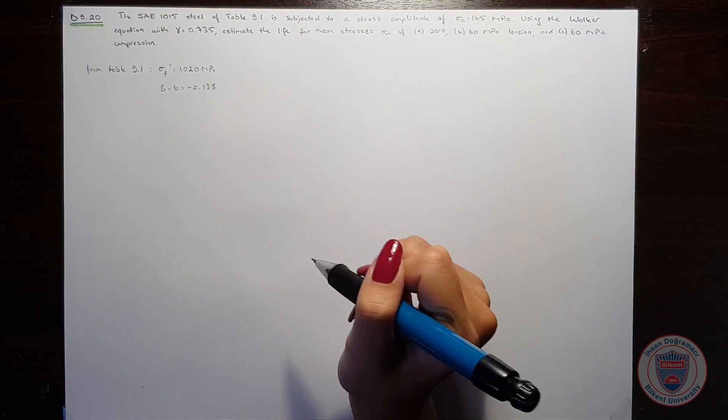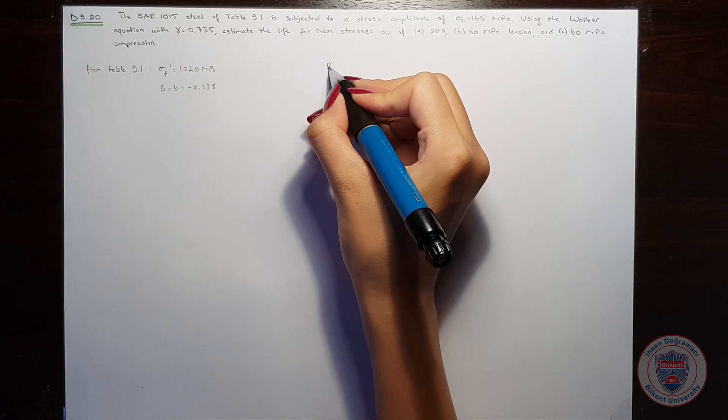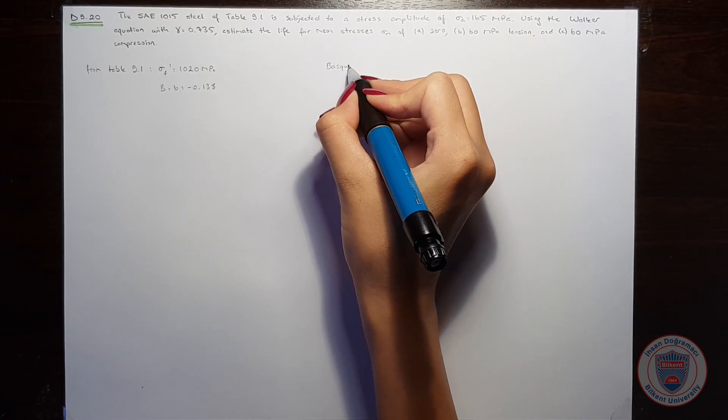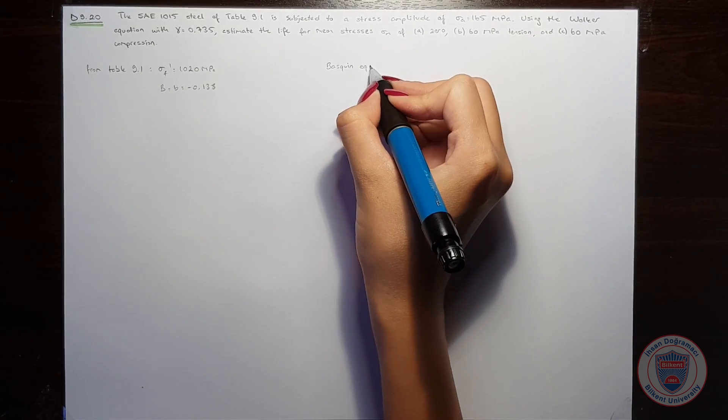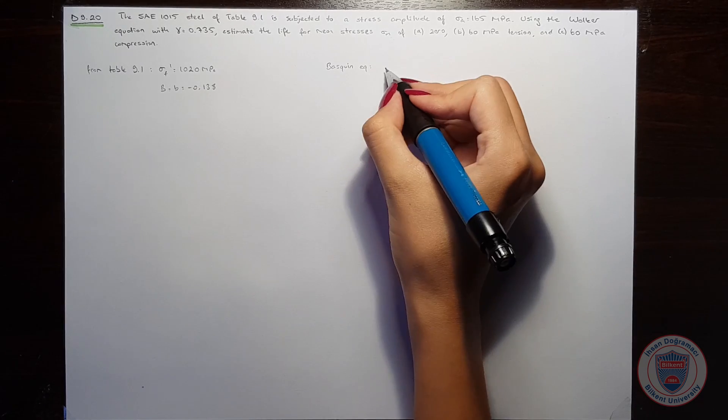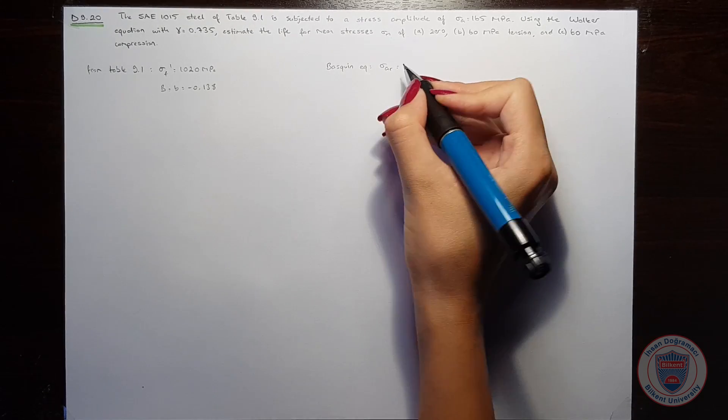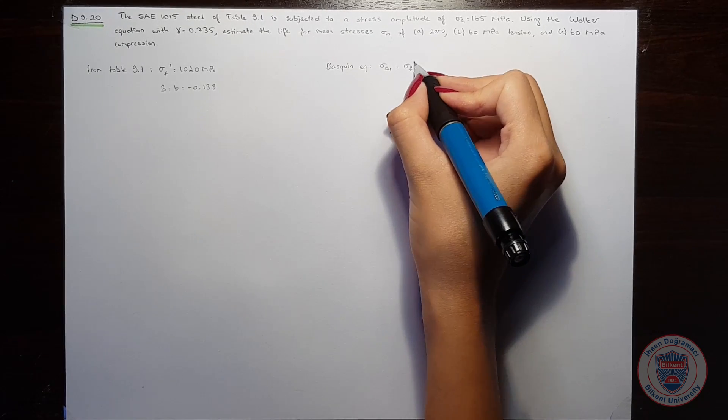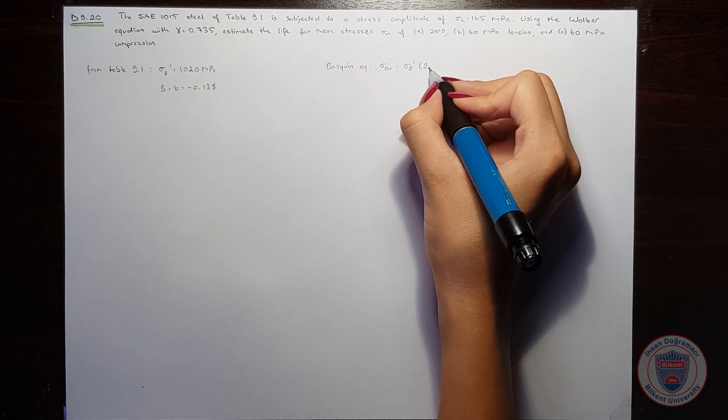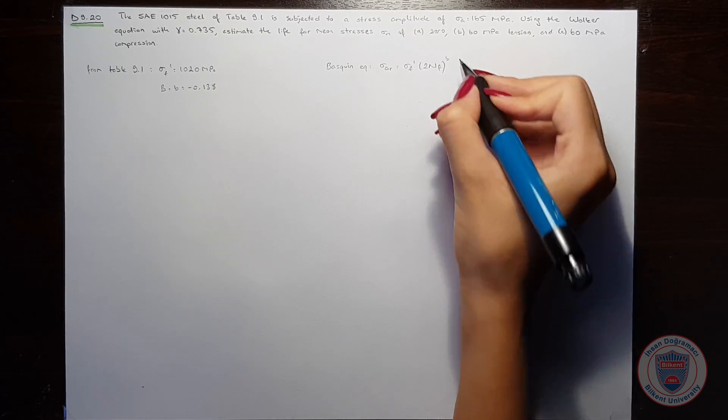Let's write the equations we will use. According to the Baskin equation, sigma AR equals sigma F prime times 2Nf to the power of B.